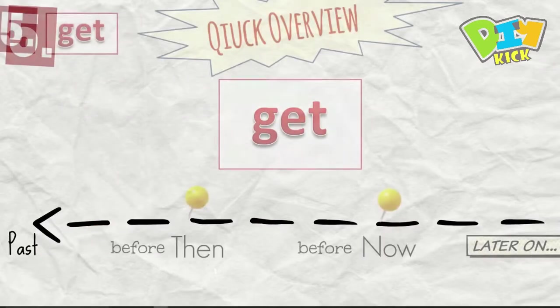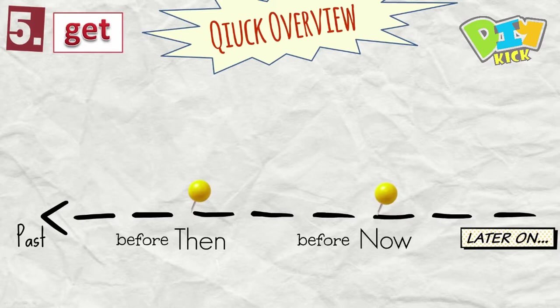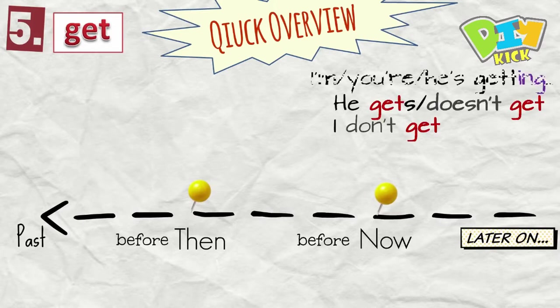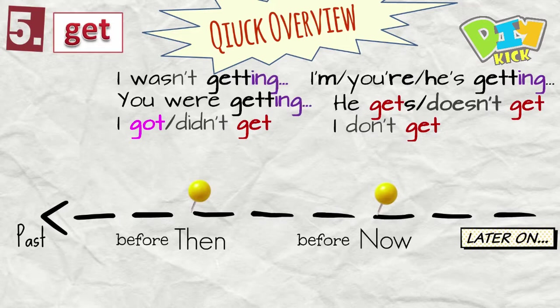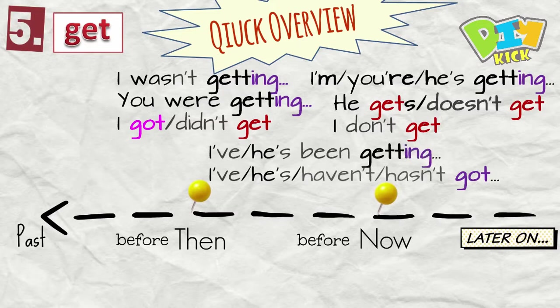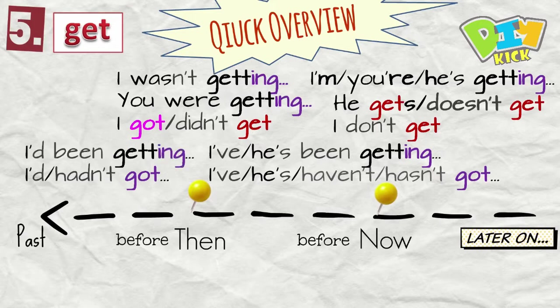Get. Quick overview again. I get. I don't get. He gets. He doesn't get. I'm getting. You're getting. He's getting. I got. I didn't get. I was getting. I wasn't getting. You were getting. I've got. He's got. I've been getting. He's been getting. I'd got. I hadn't got. I'd been getting.